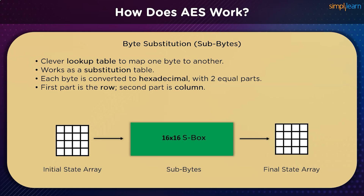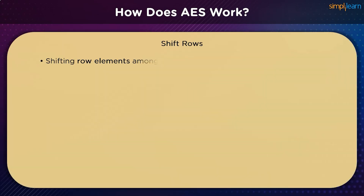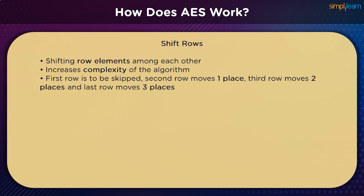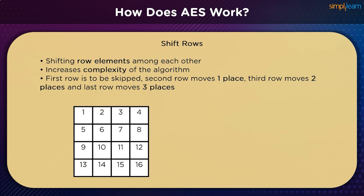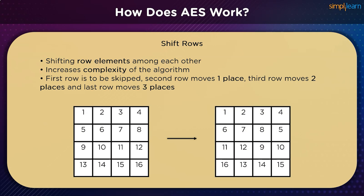When it comes to row shifting, each bit in the four rows of the matrix is shifted to the left, and any entry that falls off is reinserted to the right of the row. The change is done as follows: the first row is not moved at all; the second row is shifted one position to the left; the third row is shifted two positions to the left; and the fourth row is shifted three positions to the left. The result is a new matrix containing the same 16 bytes but rearranged relative to each other.